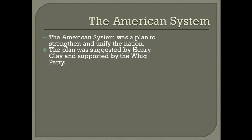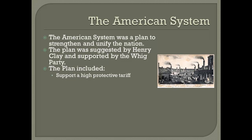The plan was suggested by Henry Clay and supported by the Whig Party, including people like John C. Calhoun. The plan included support of a high protective tariff, and keeping all public land prices high so that when they were sold they could generate federal revenue — meaning money income.